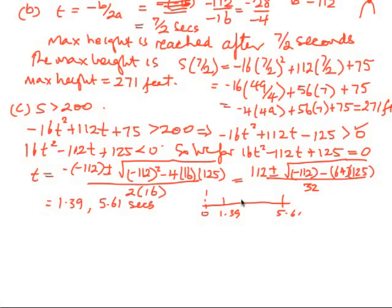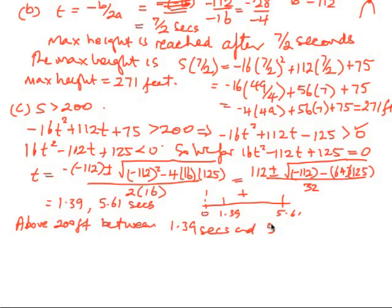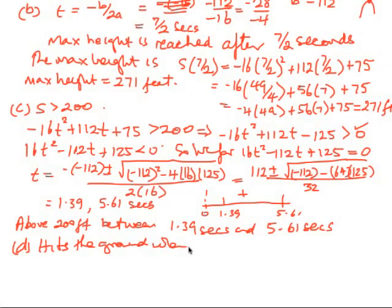When you do a number line of this, we can't have less than 0, so we have 1.39 and 5.61 as our boundary points. We check where the expression is less than 0, and you find that it's in between those values. So in other words, the ball is above 200 feet between 1.39 seconds and 5.61 seconds.